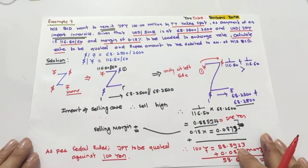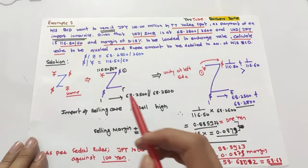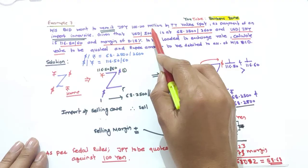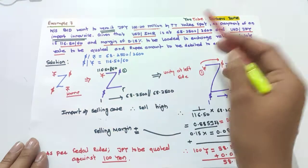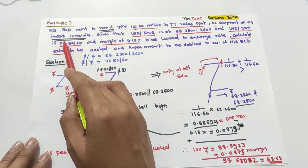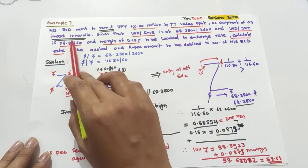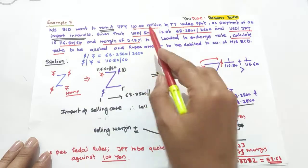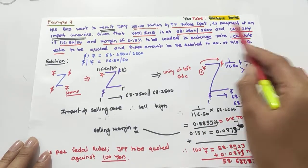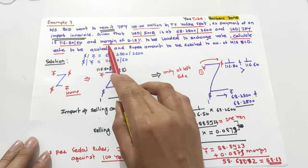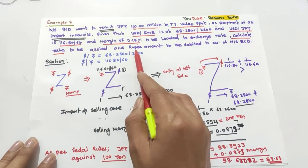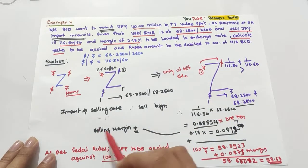This is Example 7 from your Macmillan book. BCD wants to remit JPY (Japanese yen) 100 million — where 1 million equals 10 lakh — by TT value spot, as payment of an import invoice. Import means selling case. Given: USD/INR is 68.2500/2600, USD/JPY is 116.50/60, and margin is 0.15% to be loaded.